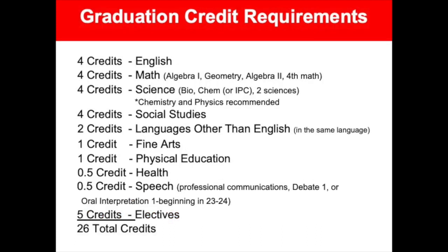The following are GCISD's graduation credit requirements. All students are required to complete four credits of English, four credits of math including Algebra 1, Geometry, Algebra 2, and a fourth math, four credits of Science — Biology, Chemistry or IPC, and two additional sciences. Both Chemistry and Physics are recommended and encouraged.